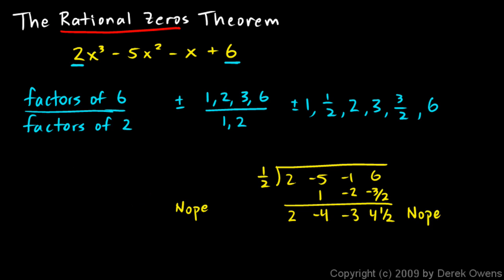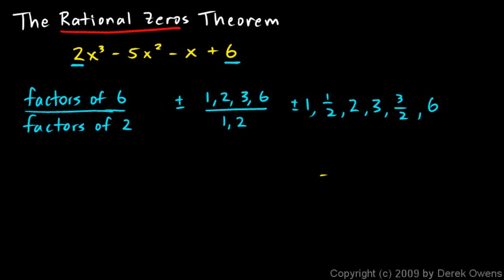So let me free up a little bit of space here. So let's try the next one, the 2. And I write down my coefficients: 2, negative 5, negative 1, 6. And bring down the 2. 2 times 2 is 4. We add, and we get negative 1. Negative 1 times 2 is negative 2. And we add there, and we get negative 3. Negative 3 times 2 is negative 6. And we add, and we get a 0. Aha! Right there.